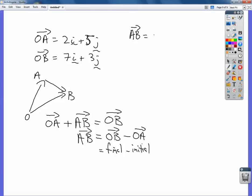We want 7i plus 3j, and we're subtracting 2i plus 5j.